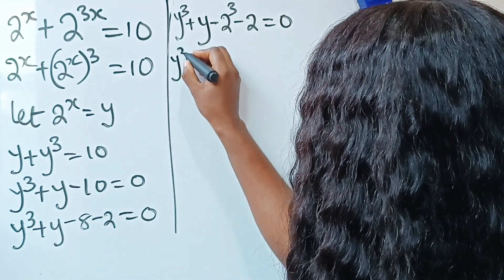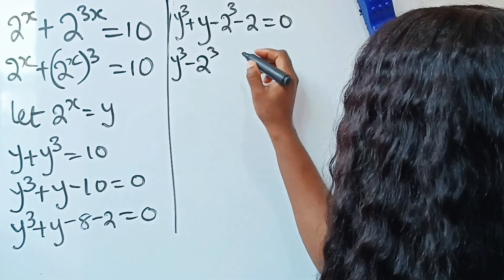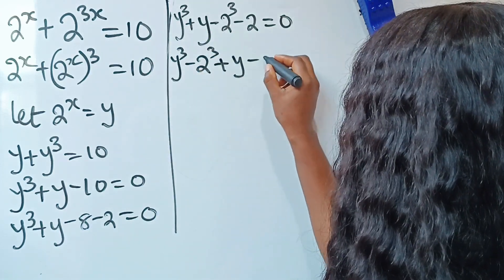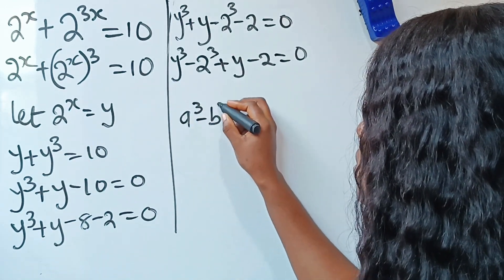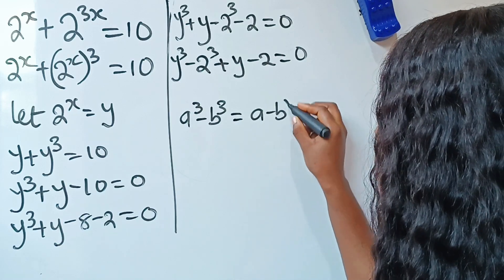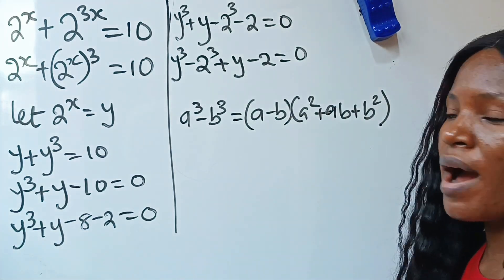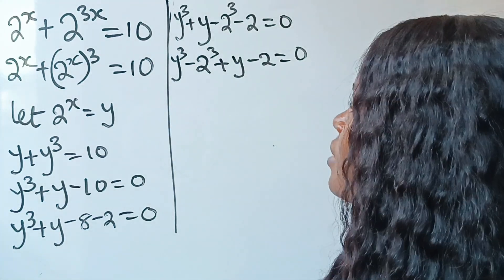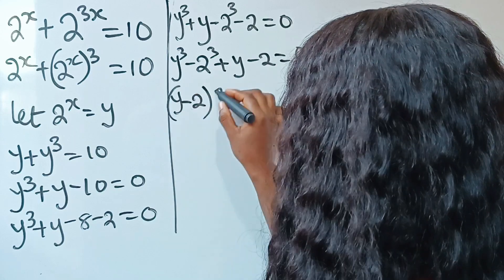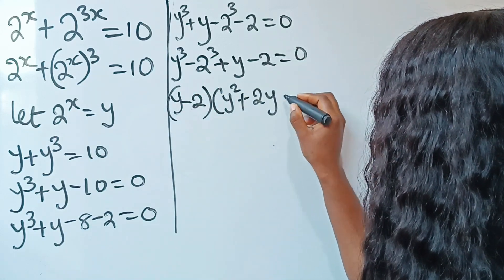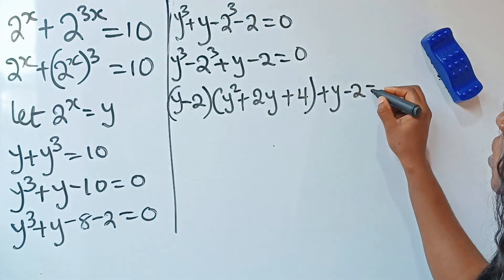Now let's collect like terms — bring the terms with power of 3 together, and the remaining terms together. Recall that a cubed minus b cubed equals (a minus b)(a squared plus ab plus b squared). We can now write y cubed minus 2 cubed as (y minus 2)(y squared plus 2y plus 4), then plus y minus 2, all equal to 0.